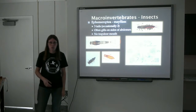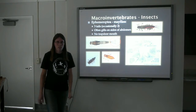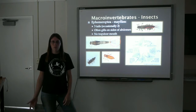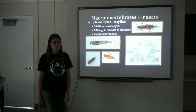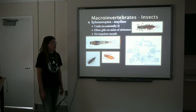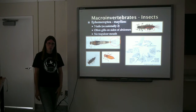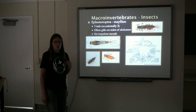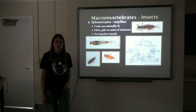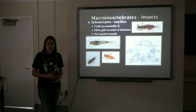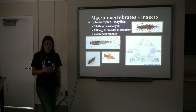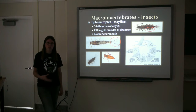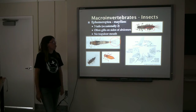I'm going to go through order by order and give some identification features of our common macroinvertebrates. We typically identify down to family, which is much more difficult than order. Just identifying to the order doesn't tell you a lot about the water quality, but it gives you a really good starting place. Once you know the order, you can then key out the macroinvertebrate to a family or even to a species level from there.